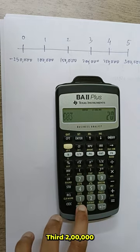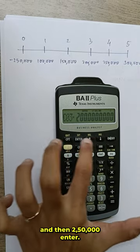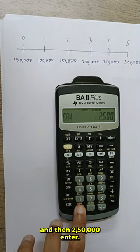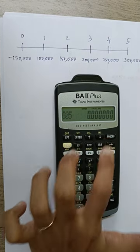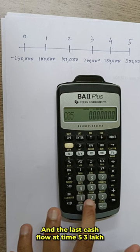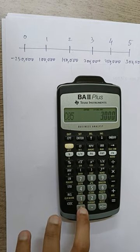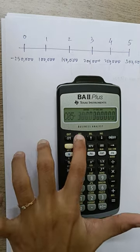Third 2 lakh, enter. Then 2 lakh 50,000, enter. And the last cash flow at time 5, 3 lakh. Enter.